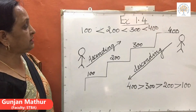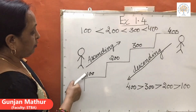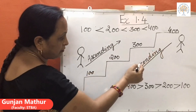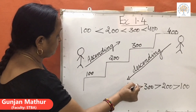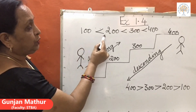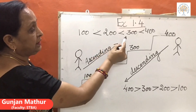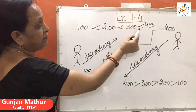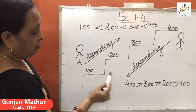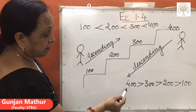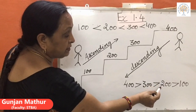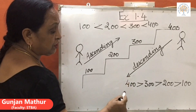As an example, going up the steps is ascending order and coming down the steps is descending order. We see that 100 is less than 200, 200 is less than 300, and 300 is less than 400 — that shows ascending order. Similarly, in descending order, 400 is greater than 300, 300 is greater than 200, and 200 is greater than 100 — that is greatest to smallest.